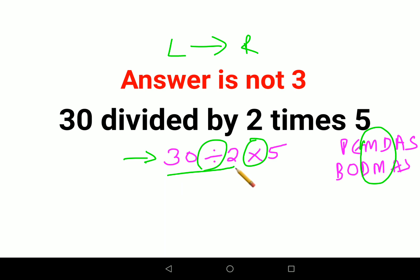First, you will do your division because division is coming first. So you will do 30 divided by 2, which gets you 15 into 5. Answer comes out to be 75. I hope this is very clear to everyone.